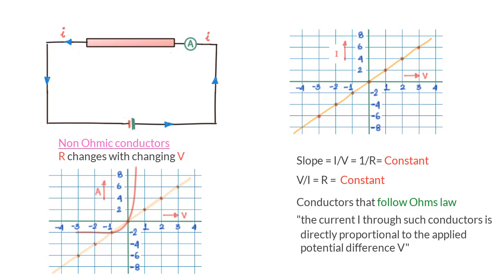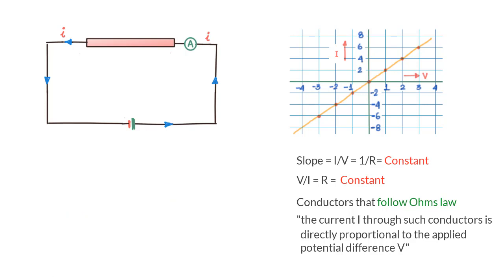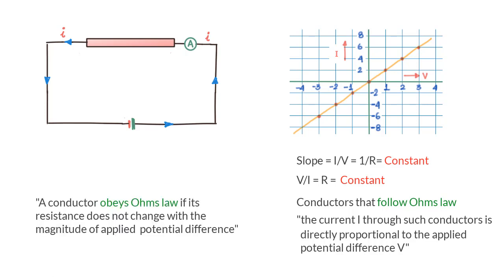Another way of stating the same law is that a device obeys Ohm's law if the resistance of the device does not change with the magnitude of applied potential difference V.